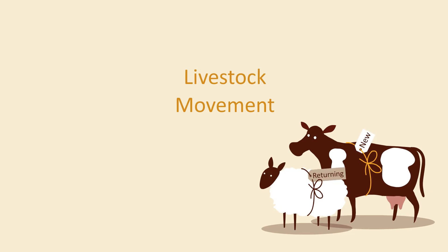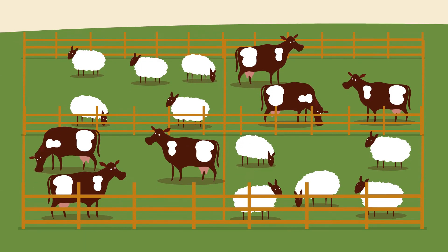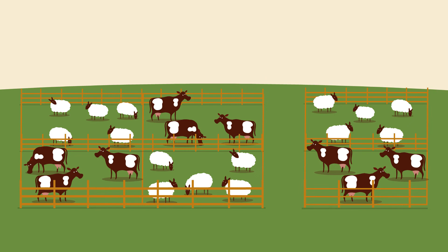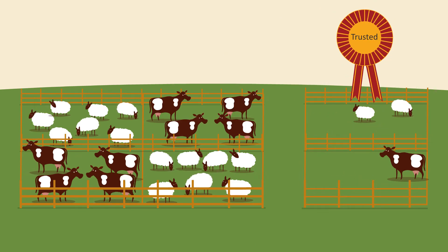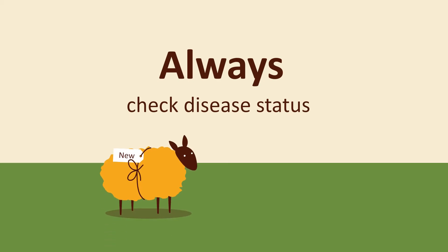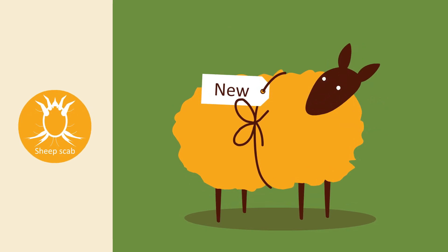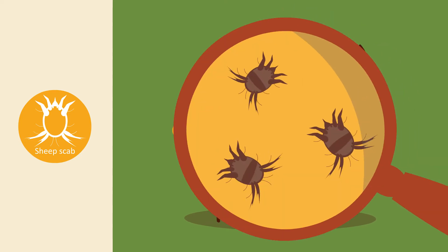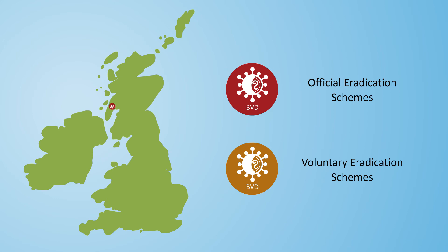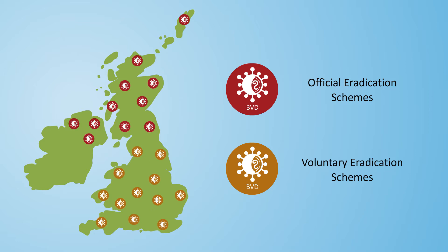Livestock movement is the most likely way to introduce disease onto your farm. In an ideal world, you would run a closed herd or flock, but failing this, buy replacement stock from accredited or trusted sources. It's sensible to always check the disease status of any newly purchased or returning animals, even if it's just from the local show. It's vital also to be aware that infested sheep may not show any clinical signs for weeks or even months after infestation. With BVD, there are official eradication schemes active in both Scotland and Northern Ireland, with voluntary schemes available in the rest of the UK.